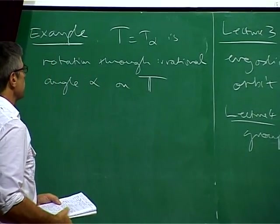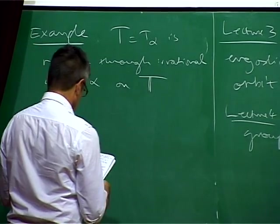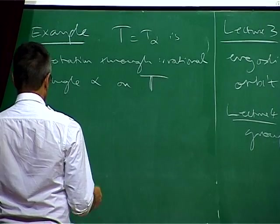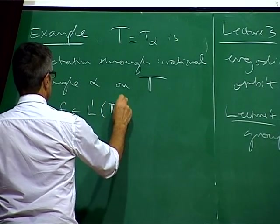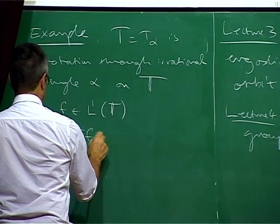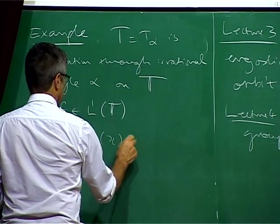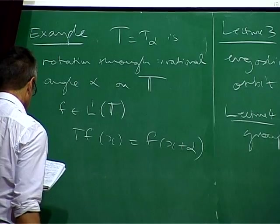So let's take the circle group and let's rotate through an irrational angle alpha. If F is in L1 of T, so Tf of x equals F of x plus alpha modulo 2 pi.